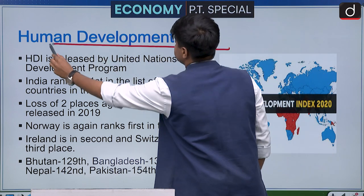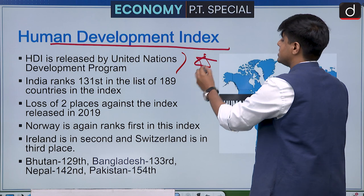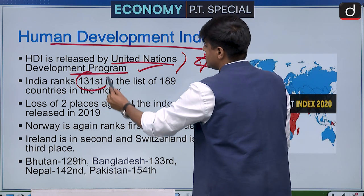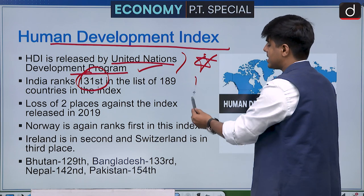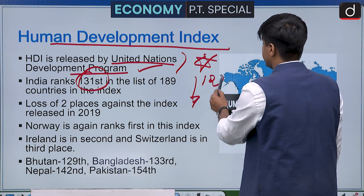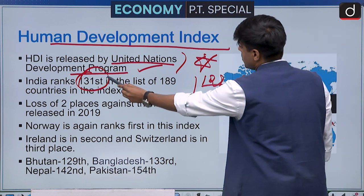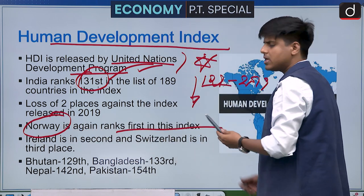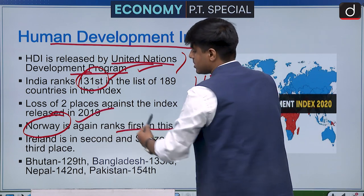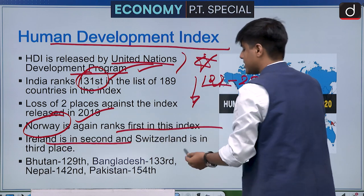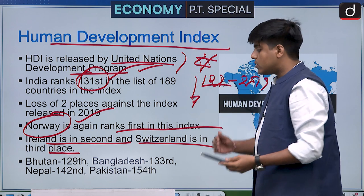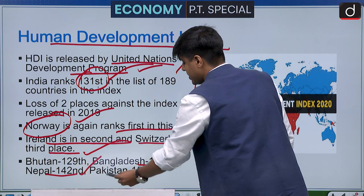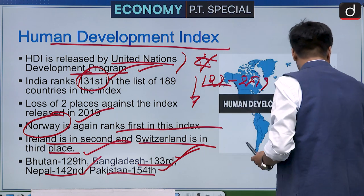The Human Development Index was in news. It is released by the United Nations Development Programme. India is ranked 131st this year — a decline of two positions from 129th in 2019. Norway is ranked first, followed by Ireland and Switzerland. In South Asia: Bhutan is 129th, Bangladesh 130th, Nepal 142nd, and Pakistan 154th.